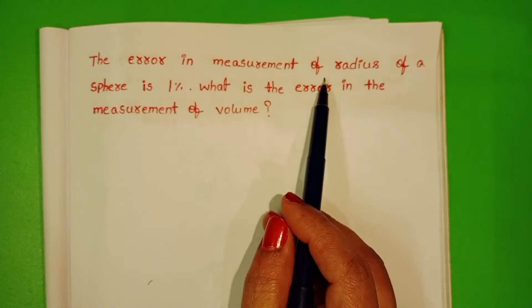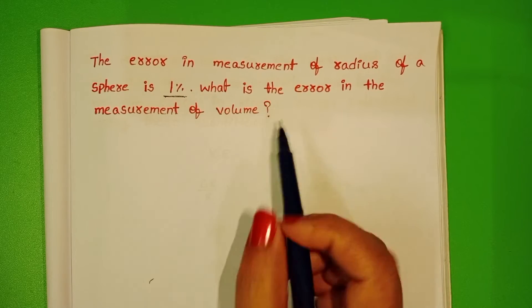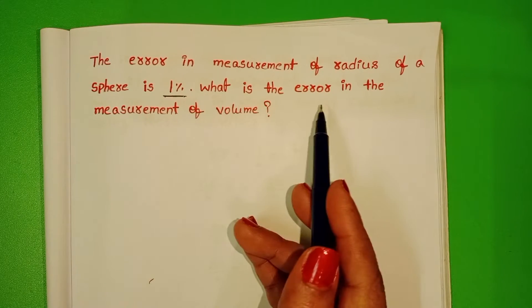The error in the measurement of radius of a sphere is 1%. What is the error in the measurement of volume?